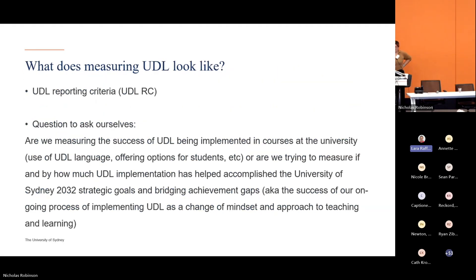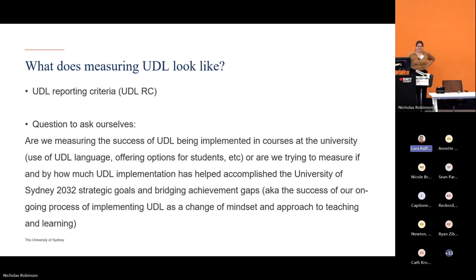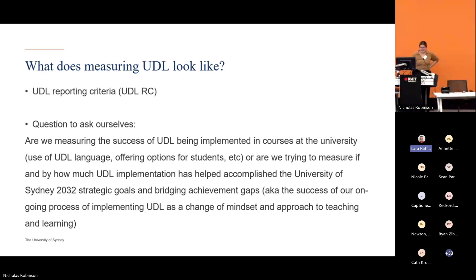So what does measuring UDL look like? The UDL Reporting Criteria — the UDLRC — was created in 2017 as a checklist of things we can use to measure UDL implementation success.